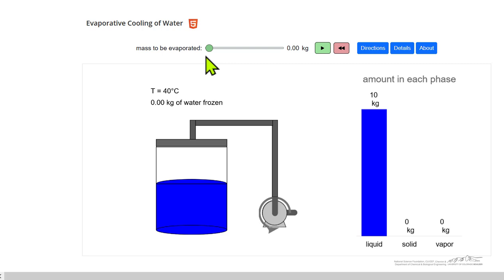So the simulation here, we start with no water evaporated, and let's just increase the amount. You can see we're forming vapor and we're lowering the temperature.